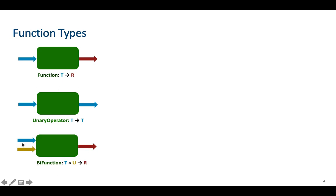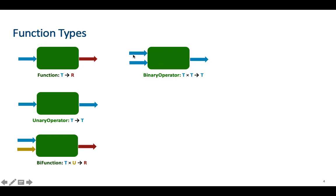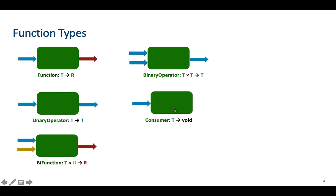When we have two inputs and one output, the function type is called BiFunction or Binary Function. When we have two inputs and one output and the types of the inputs are the same as the type of the output, it is called Binary Operator in Java. When the function has one input and it doesn't have any output, it is called Consumer in Java.